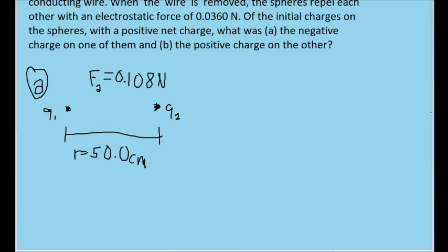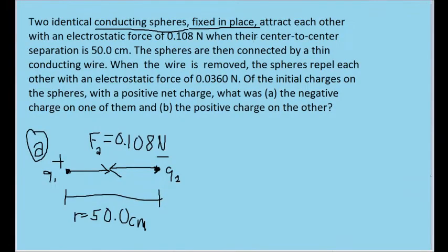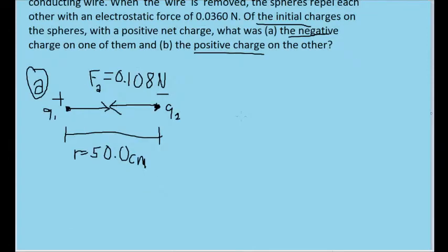experience a force of 0.108 newtons, and the force is directed towards each other. So I'll draw them as closing in arrows. Since the force between them is attractive, that means they have opposite signs. So one of them is going to be positive, and one of them is negative. Since the problem is asking for the initial charges on the spheres, we know that there is going to be a negative charge and a positive charge, which is what we're tasked with finding. This describes phase A of the problem.